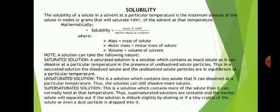Solubility of a solute in a solvent is defined as the maximum amount of the solute in moles or in grams that will saturate 1 dm³ of a solvent at a particular temperature. Temperature is a function of solubility — as the temperature of a solution increases, the solubility of the solute tends to increase. Mathematically, solubility = (mass × 1000) / (molar mass of solute × volume), where mass is the mass of the solute dissolved, molar mass is the molar mass of the solute, and volume is the volume of the solvent.